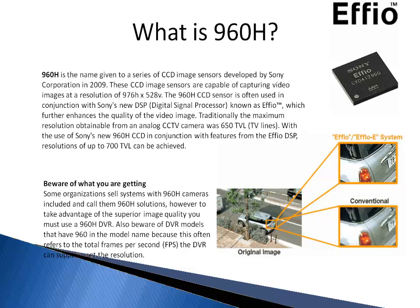Traditionally, the maximum resolution obtainable from an analog CCTV camera was 650 TV lines. With the use of Sony's new 960H CCD in conjunction with features from the FEO DSP, resolutions of up to 700 TVL can be achieved.